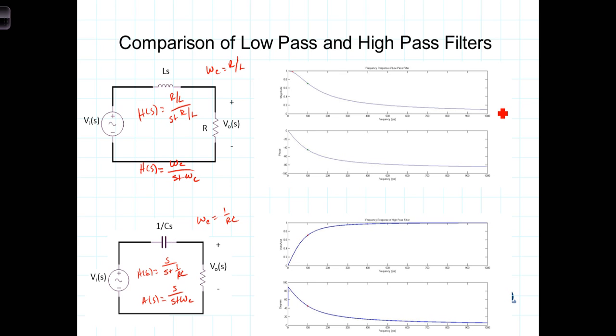On the other hand the high-pass filter has an S in the numerator. The transfer function equals zero at S equals zero. There is a value of S in the numerator that will cause the numerator to go to zero.